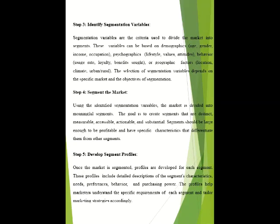The third step is to identify segment variables — you can segment the market on the basis of different variables. The four common bases of segmentation are demographics, psychographics, behavior, and geographic factors. The most popular is demographics — based on age, gender, income, and occupation — followed by psychographics: the lifestyle, standard of living, attitude, values, beliefs, and culture of people.